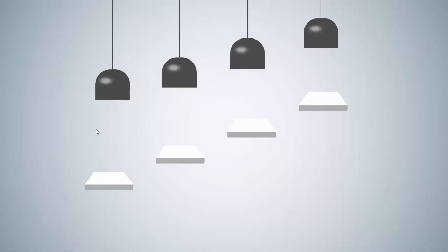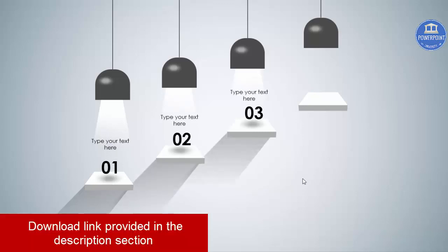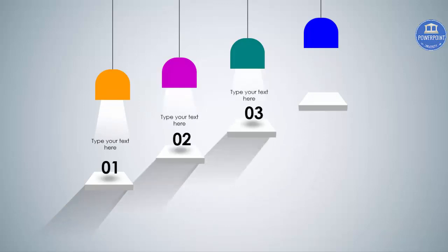This is how the slide works. I have just put four steps and each step has a lamp on top. When I click, the first option appears with the light and the text. You can type it here and there's a shadow effect. Clicking again shows the second, third, and fourth options. Isn't it great to display data in this particular format?